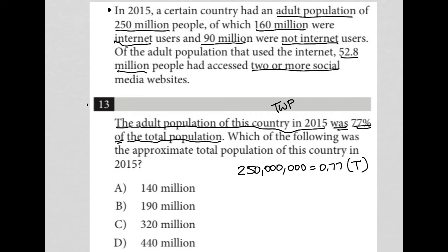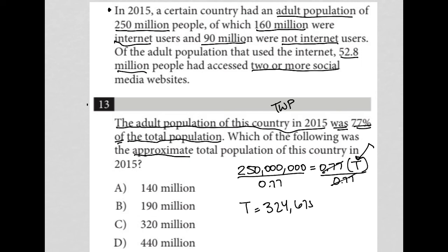That is the mathematical equation equivalent for this first sentence. The next part of the question asks which of the following was the approximate total population of this country in 2015 — practically, what is the value of capital T? It won't be exact, which is why we're looking for the approximate. So I'm going to divide both sides by 0.77 to isolate T. This is the calculator section, so you can just type this in. T is equal to approximately 324,675,324.